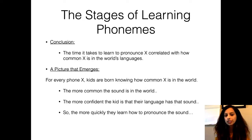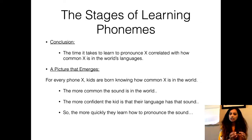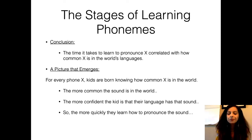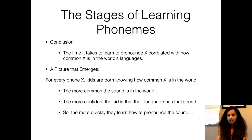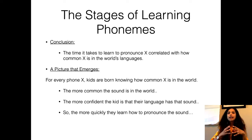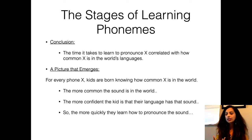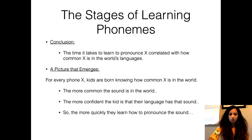The conclusion with respect to learning phonemes is that the time it takes to learn to pronounce a particular speech sound is correlated with how common that sound is in the world's languages — the more common the sound is in the world, the more confident the child is that their language has it. Children as young as six to eight months can actually produce all the sounds in the world, and then as they grow older and keep hearing sounds from their caregiver's language, they start to lose the speech sounds they do not need.